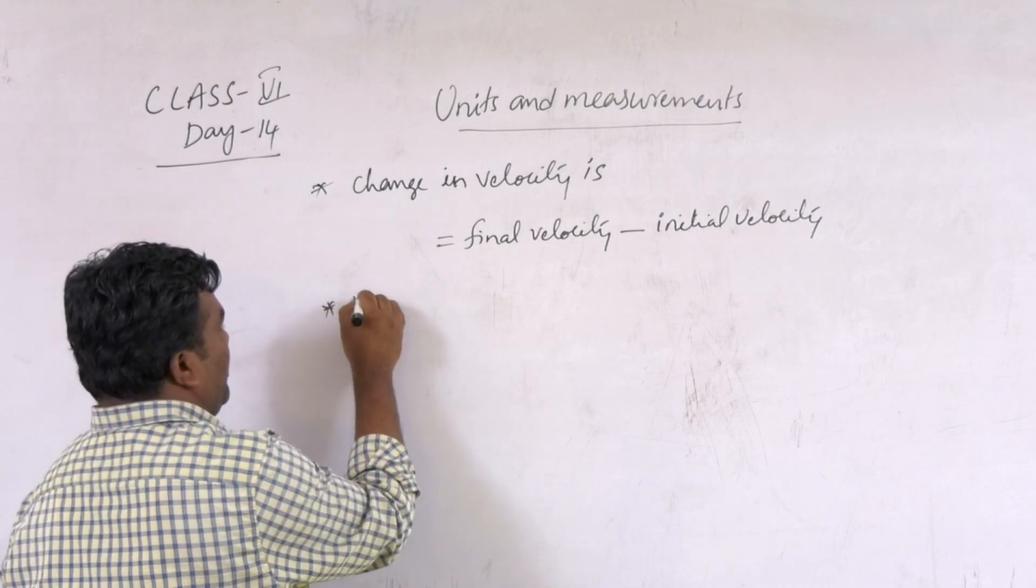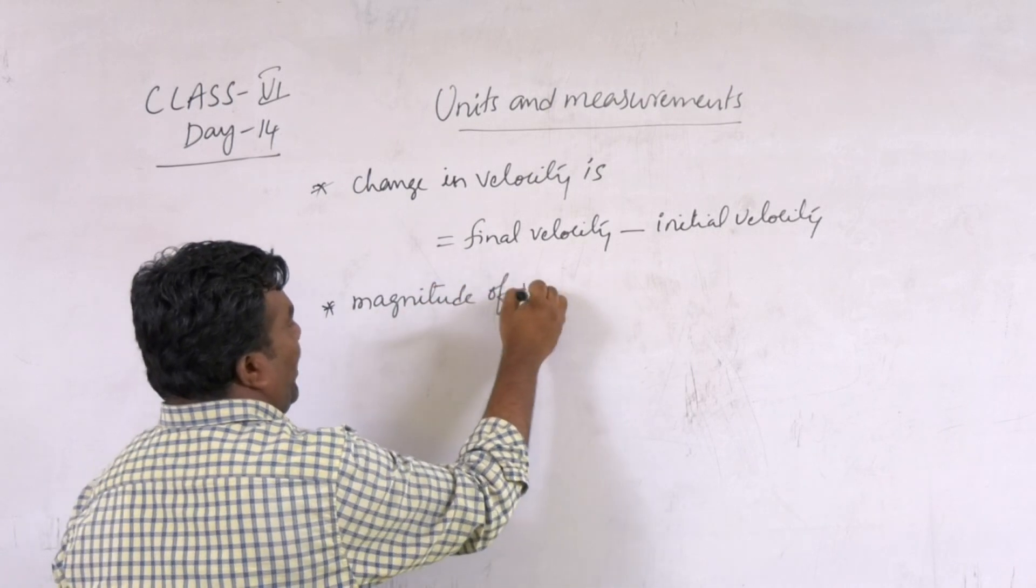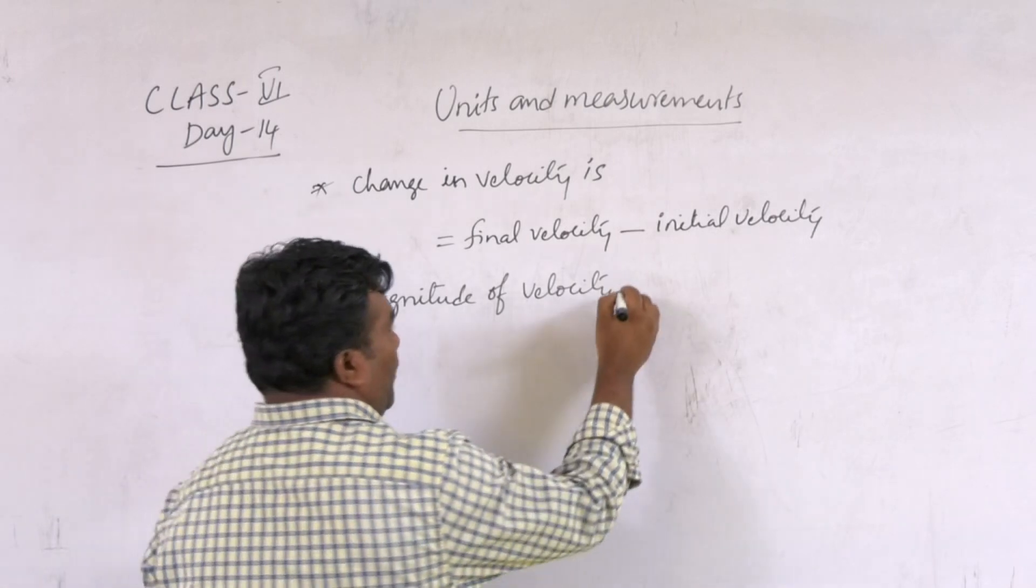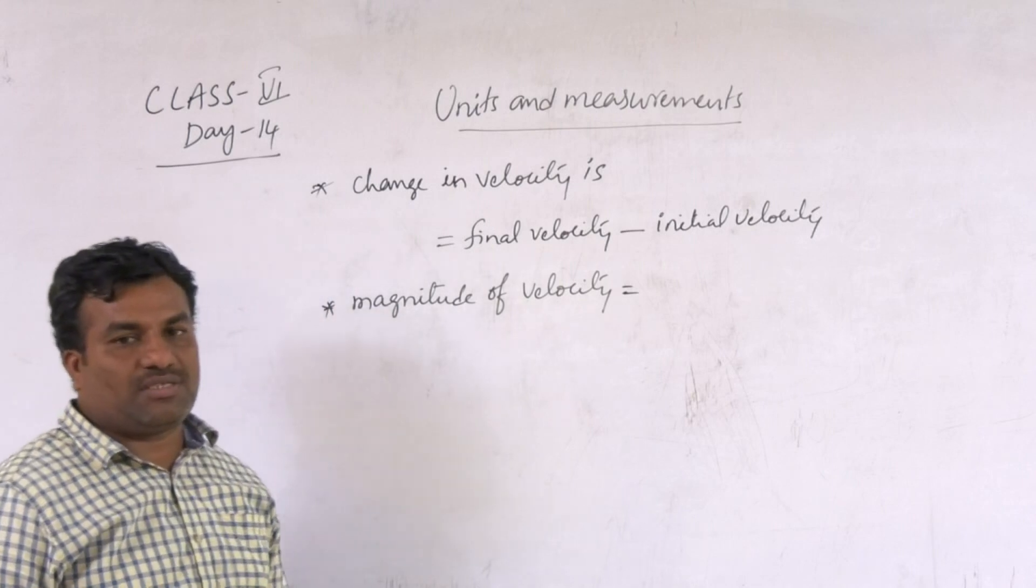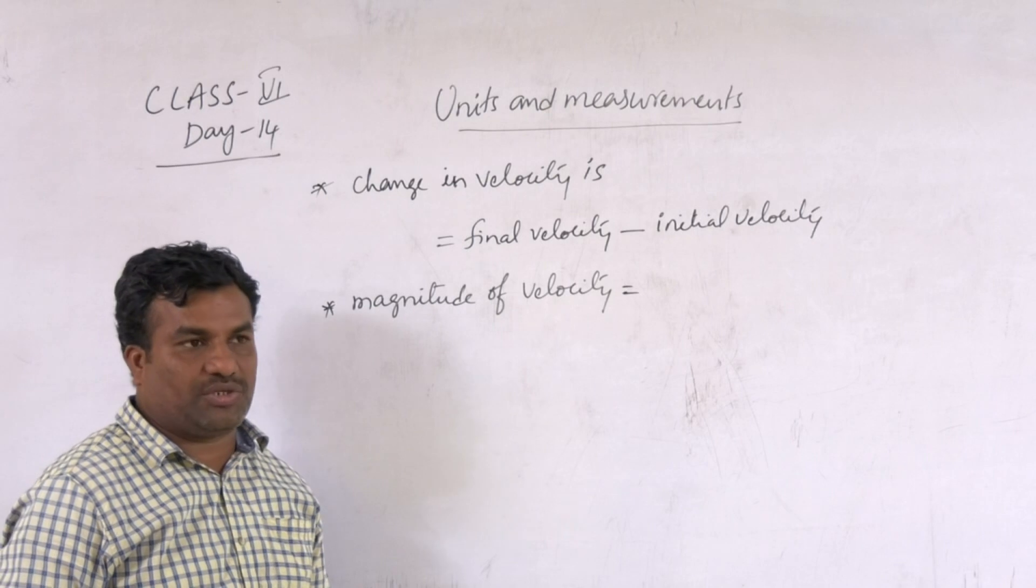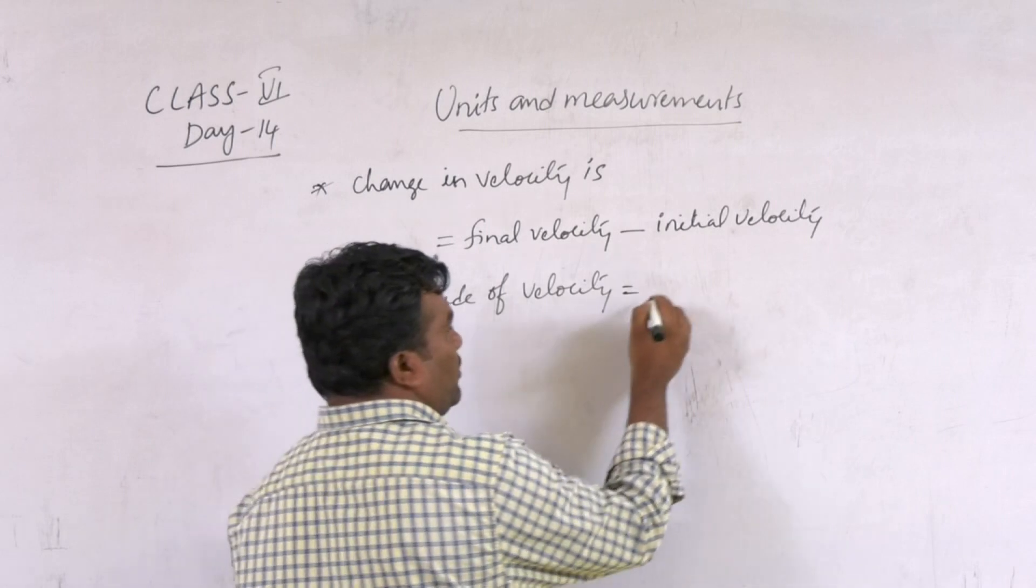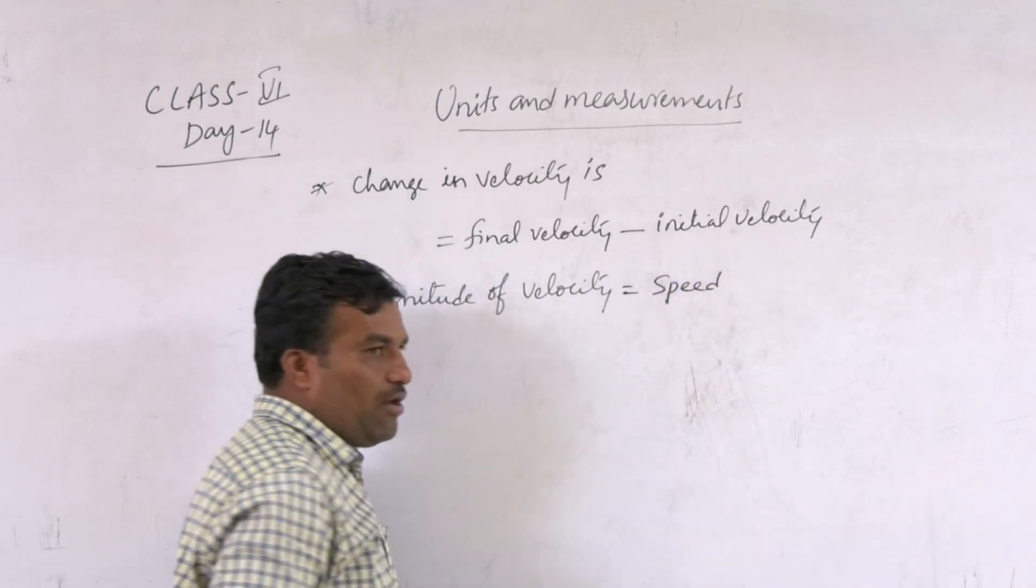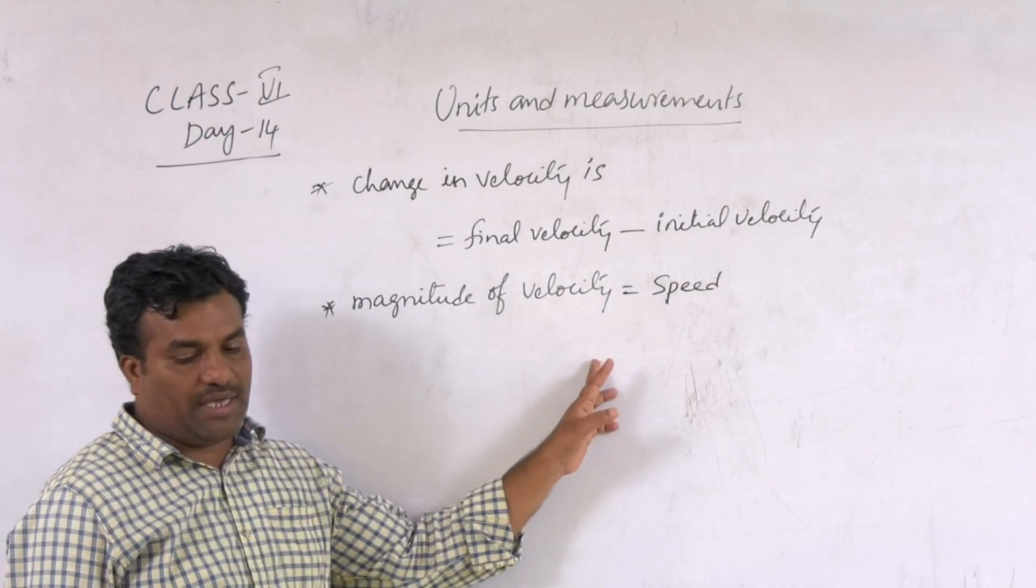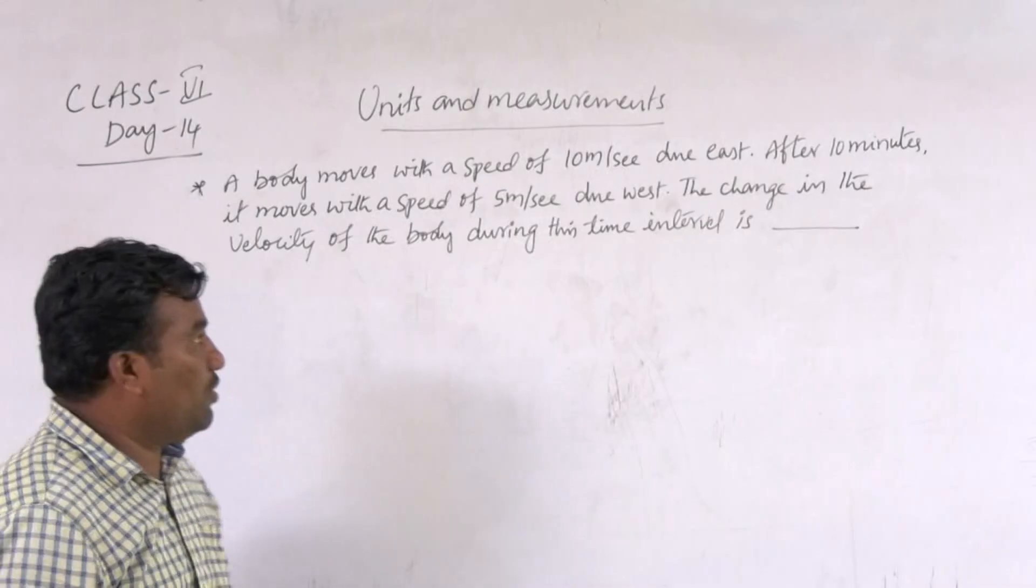Next, we go with another question. Magnitude of velocity. We have discussed already that velocity is a vector quantity. It has both magnitude and direction. But they are asking only magnitude of velocity, which means speed. Why? Because speed is a scalar quantity. It has only magnitude, no direction. That's why magnitude of velocity is equal to speed.